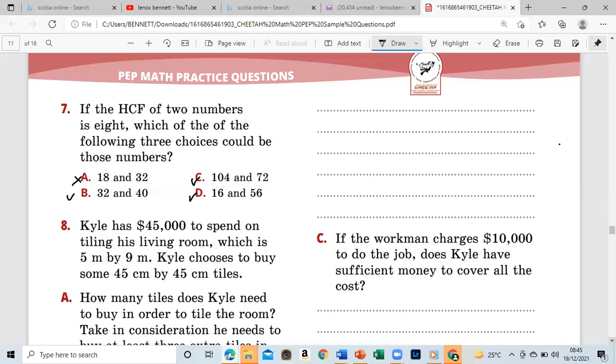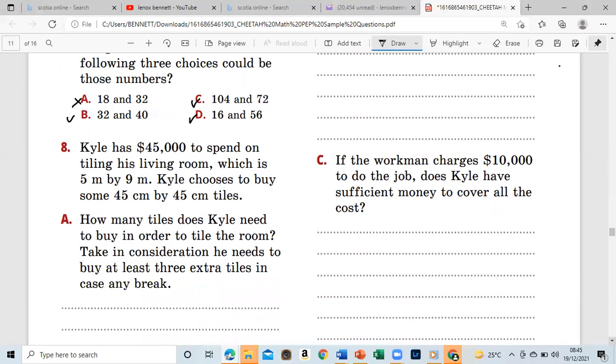Let's look at number eight. It says that Kyle has $45,000 to spend on tiling his living room which is 5 meter by 9 meter. Kyle chooses to buy some 45 centimeter by 45 centimeter tiles. How many tiles does Kyle need to buy in order to tile the room? Take into consideration he needs to buy at least three extra tiles in case any break.